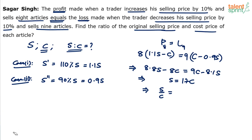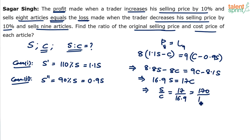8.8 plus 8.1 — so 8.8 plus 8.1 is 16.9. So 16.9S equals 17C, meaning S by C comes out to be 17 by 16.9, which can be taken as 170 by 169. So the ratio of original selling price and the cost price will be 170 is to 169.